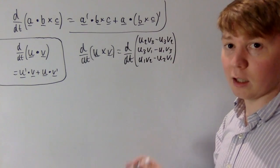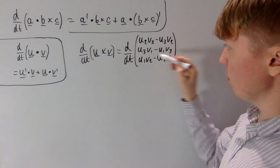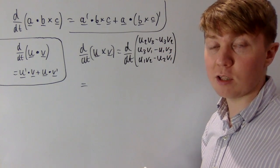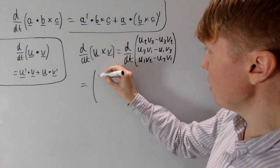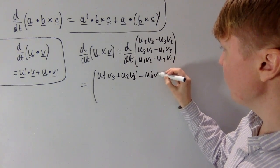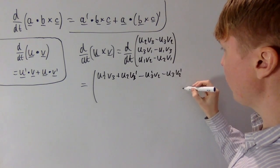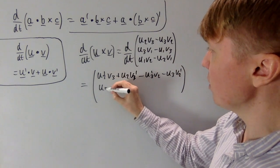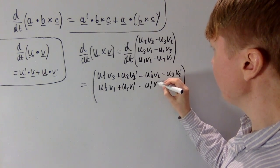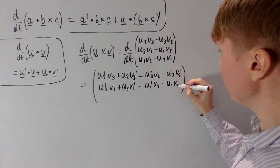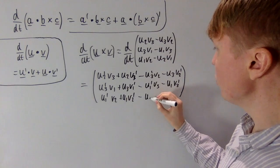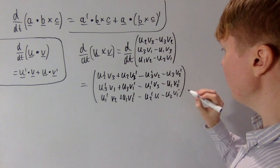To differentiate this vector with respect to t, we differentiate each entry, applying the product rule six times. For the first entry: u2'v3 + u2v3' − u3'v2 − u3v2'. For the second entry: u3'v1 + u3v1' − u1'v3 − u1v3'. For the third entry: u1'v2 + u1v2' − u2'v1 − u2v1'. This gives a large expression which we'll then simplify.